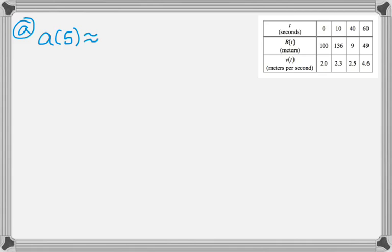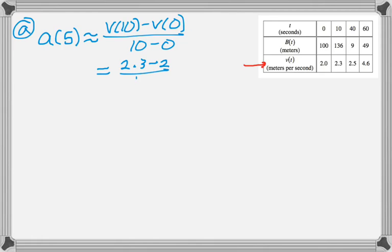So the first question is to approximate the acceleration at t equals 5. Well, A(5) is going to approximately be a difference quotient, so we have to use the velocity row of this table. So we use V(10) minus V(0) over 10 minus 0. Fill in some values from the table and keep dividing.